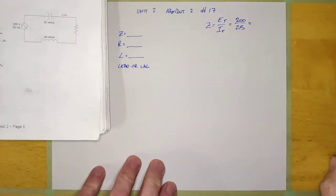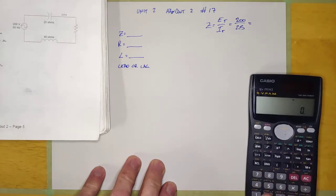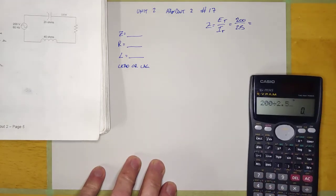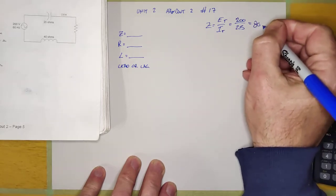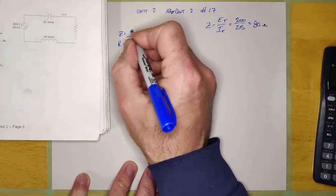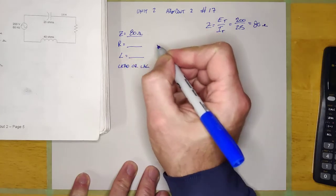which is what it says right here, and 200 divided by 2.5 equals 80 ohms. So that's sort of step one. 80 ohms.